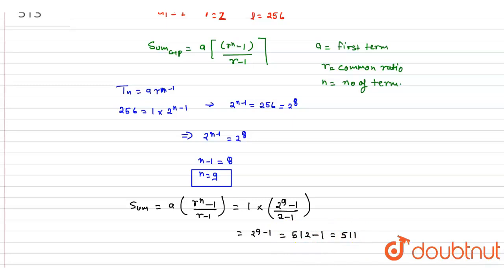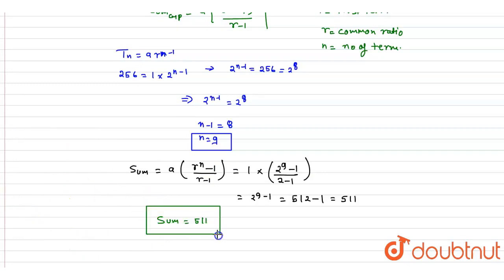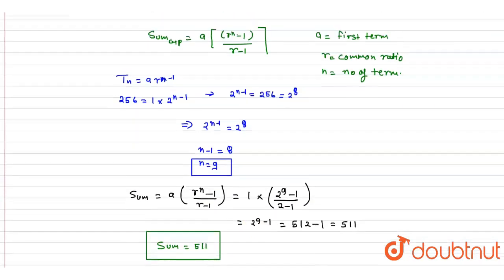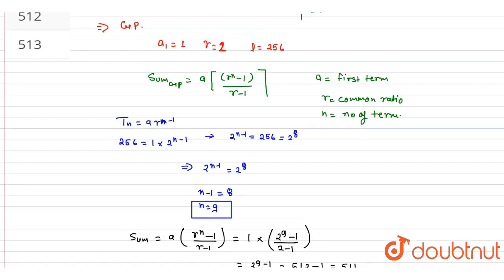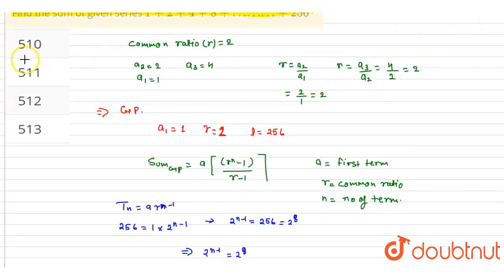So the sum of this series is 511. This is our answer. Now let's check the options — option B is correct.